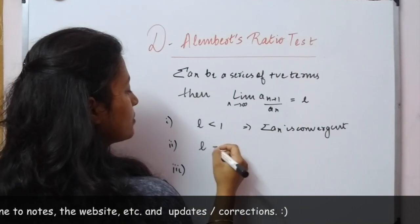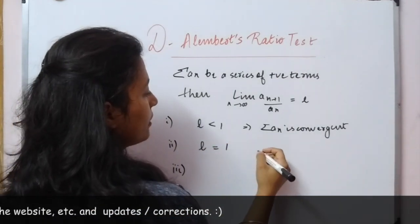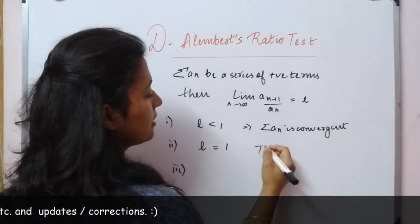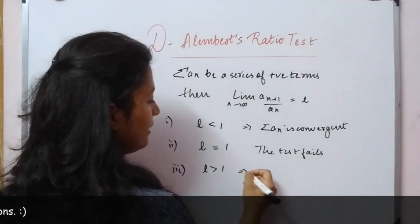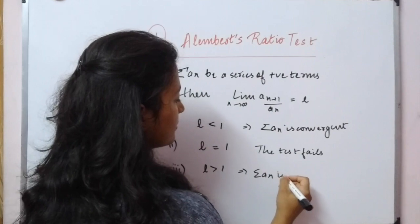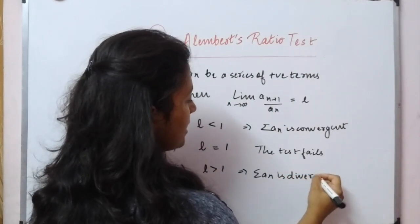If L equals 1, then we cannot say anything about the series. The test fails. And if L is greater than 1, then the series is divergent.